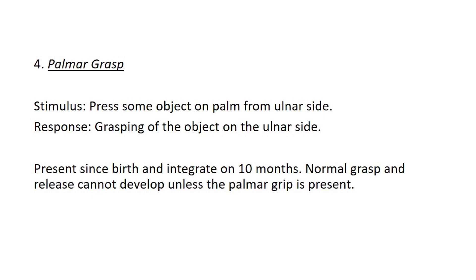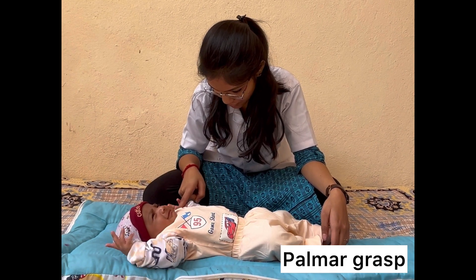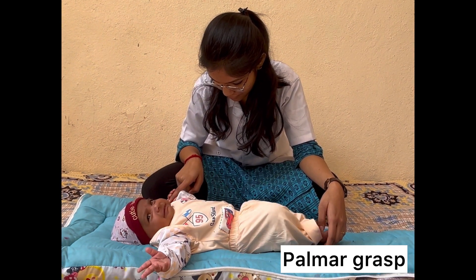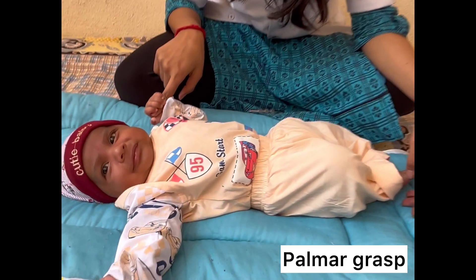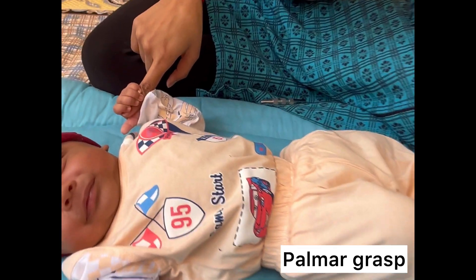Fourth: palmer grasp. Stimulus: press some object on the palm from the ulnar side. Response: grasping of the object on the ulnar side. Present since birth and integrates at ten months. Normal grasp and release cannot develop unless the palmer grip is present. Here, the therapist presses her finger on the palm of the baby from the ulnar side and the baby grasps it.